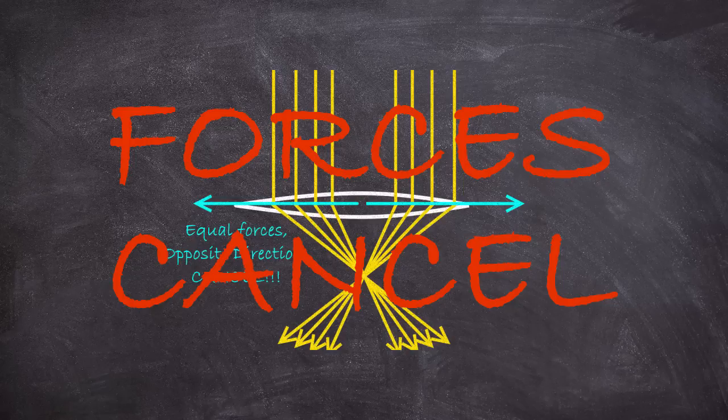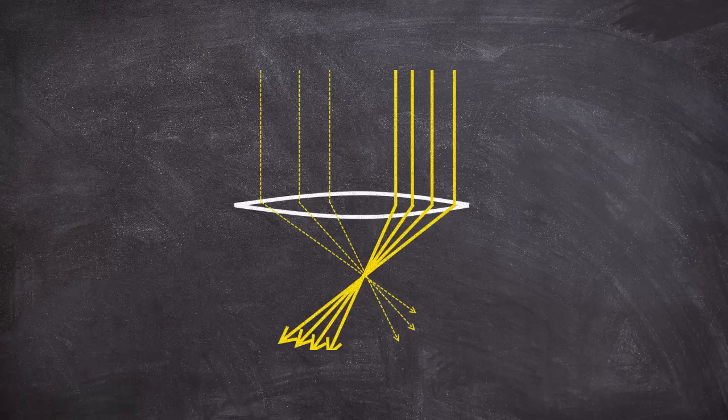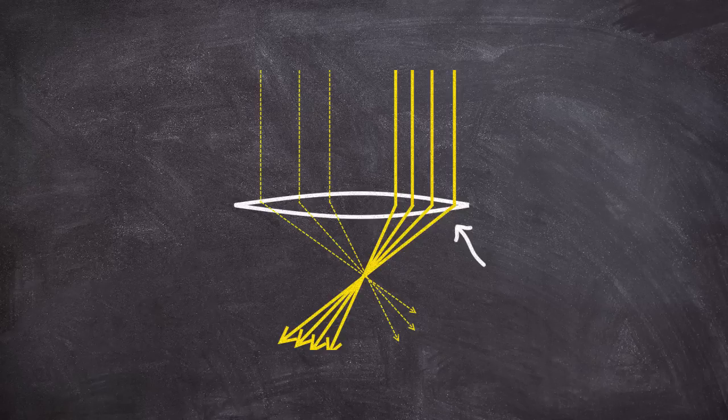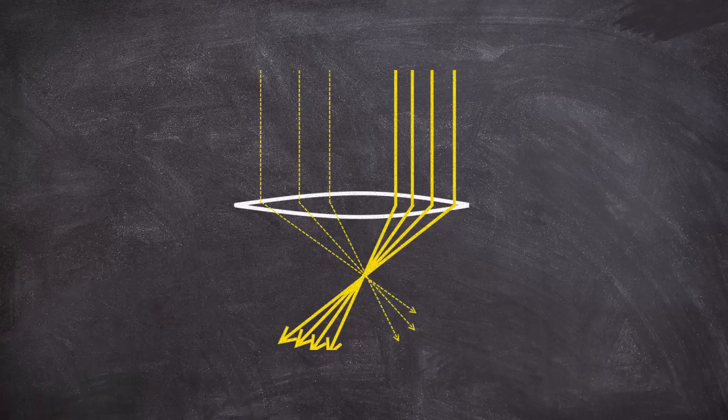However, let's imagine I illuminate it unevenly. Let's imagine the light passing through the right side is brighter than the left. What happens then? Well, there's still a force to the right and left, but the force to the right is now stronger. The net force is now to the right, and the lens will be pushed to the right.